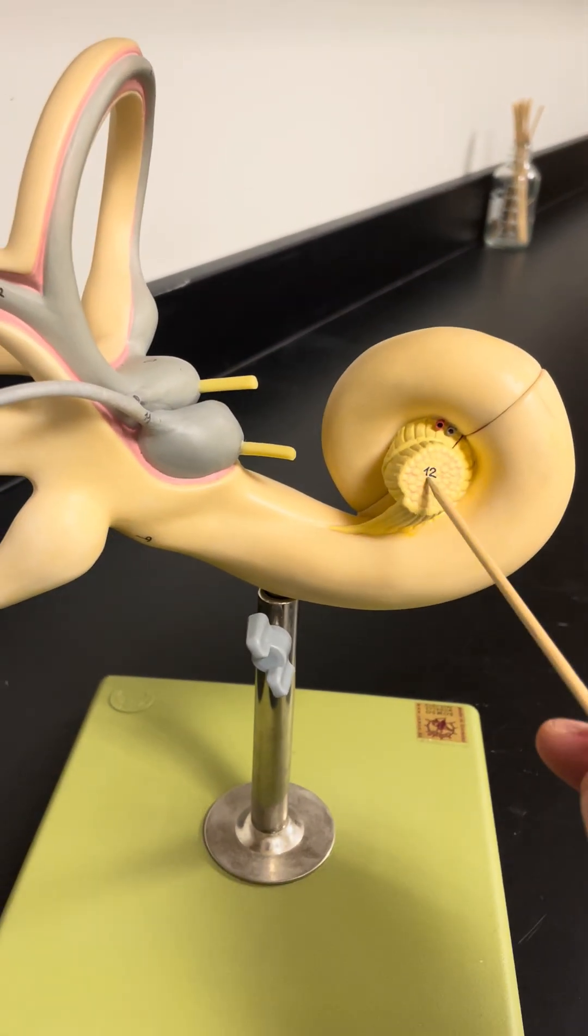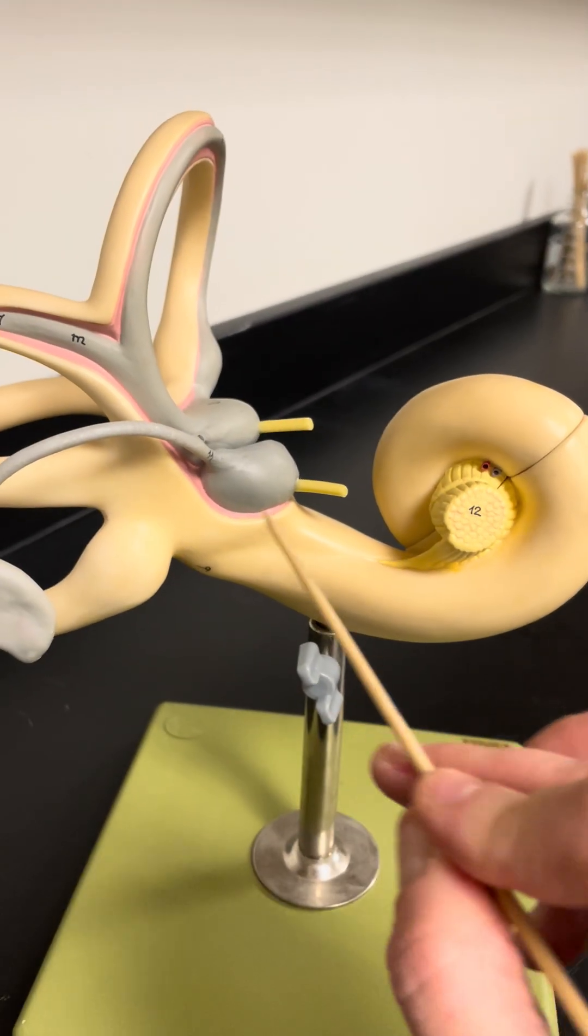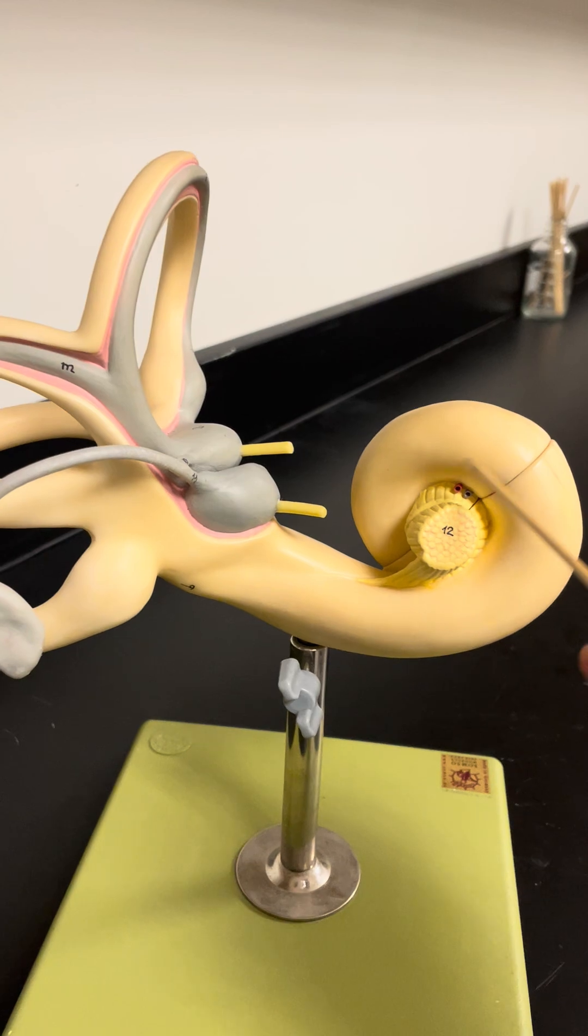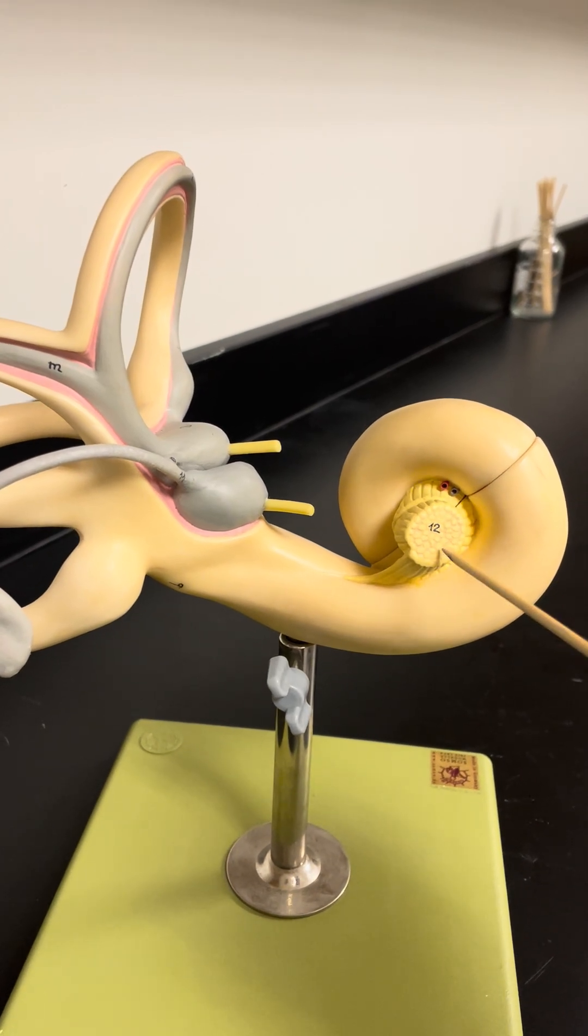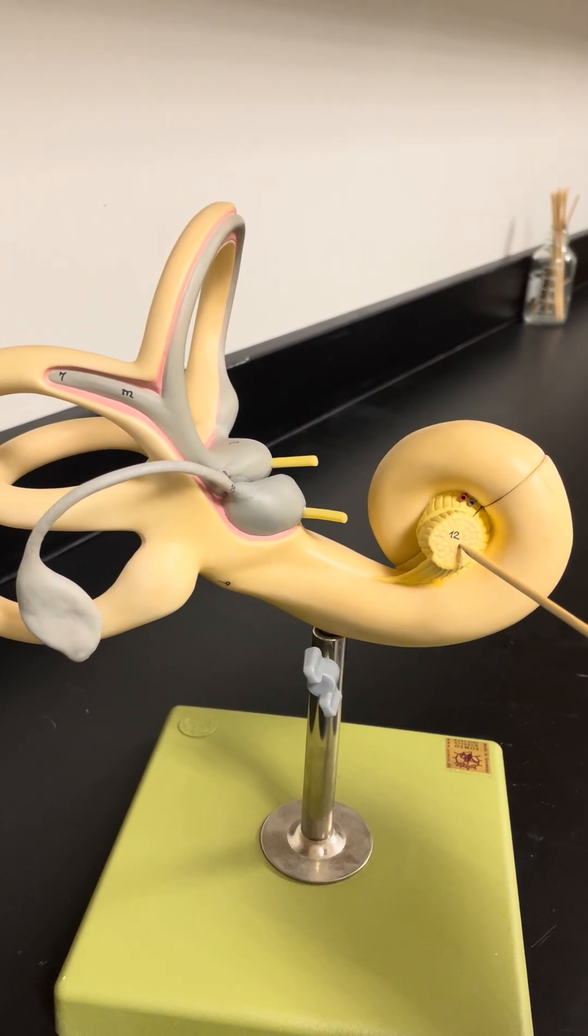Here we can see that vestibulocochlear nerve. Here is the branch that's going into the vestibule, that's our vestibular nerve, and this big branch going into the cochlea is our cochlear nerve. They exit together as cranial nerve number eight, vestibulocochlear.